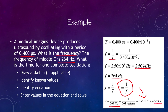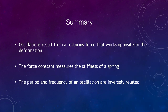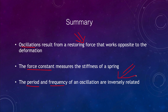Let's finish with a summary of what we've covered. We talked about oscillations, which result from a restoring force that works opposite to the deformation — if an object is deformed in one direction, the force pulls it back in the opposite direction. We discussed the force constant, which measures how stiff a spring is. Finally, we covered the period and frequency of an oscillation and how they are inversely related. That concludes this lecture on oscillations. We'll be back next time for another topic in physical science — until then, have a great day everyone.